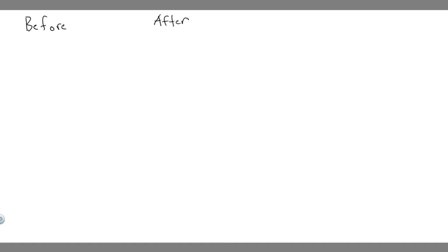So, two different scenarios, but let's just draw what's going on before and after. Before: we have this hunter holding a gun on this pond. So before, they're both going to have a mass. The mass of the person and the gun combined is 72.5 kilograms. And then there's going to be a bullet — the mass of the bullet is going to be 4.2 grams. Before, they're both not moving, because the bullet's in there and he's not moving either. So their velocities are both equal to zero.